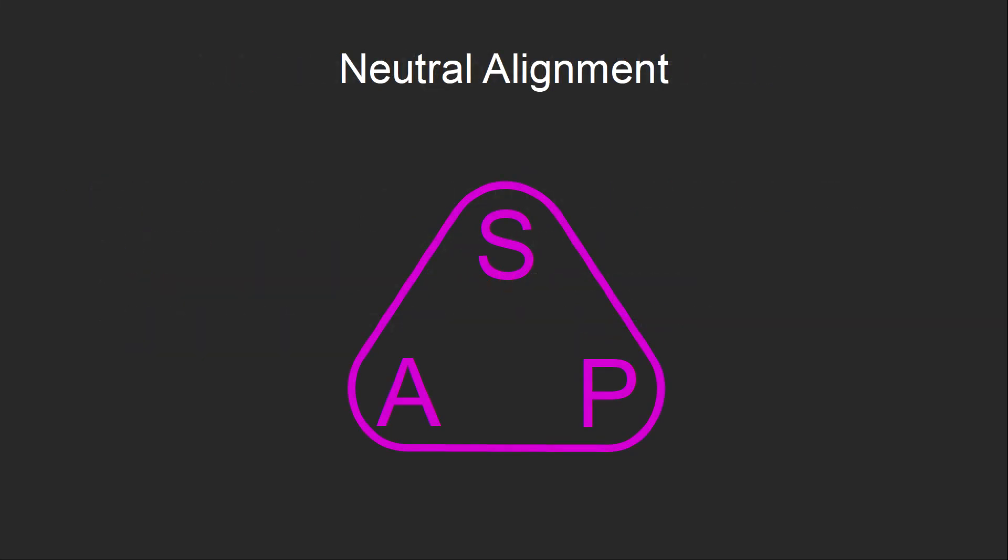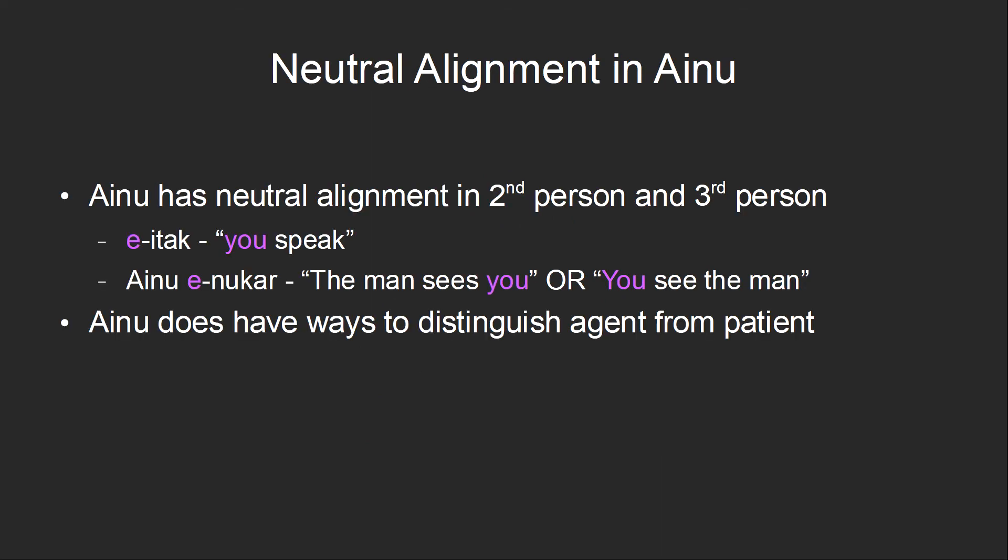Some languages make no distinction at all between the subject, agent, and patient — not even by word order. This is called neutral alignment. It's quite rare for obvious reasons: it leads to ambiguous transitive sentences. An example of neutral alignment can be found in the Ainu language, which is spoken in northern Japan. Ainu has neutral alignment in the second and third person. For example, the sentence 'Ainu enukar' can mean 'the man sees you' or 'you see the man.' Ainu does have ways to distinguish the agent from the patient, but this is the most natural way of saying the sentence.